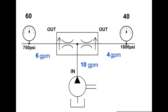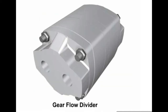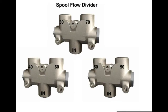The two types of proportional flow dividers are the spool and the gear or rotary. Spool-type proportional flow dividers divide the flow into two flow paths. The input flow is divided proportionally between the two output flow paths. Common flow divisions are 30-70, 40-60, and 50-50.